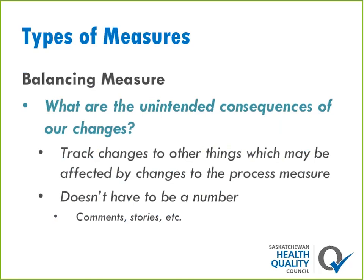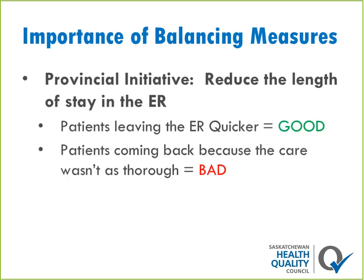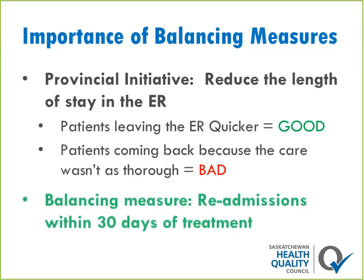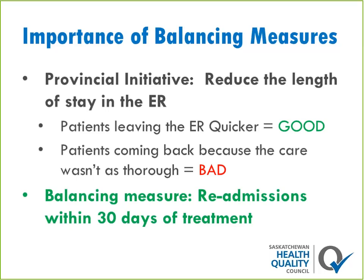The third category is the balancing measure — a really important thing to consider because these are measures that can show you if there are unintended consequences to changes you've made. Balancing measures don't have to be numerical — they can be comments or stories, anything that sheds light on other areas affected by your changes. For example, there's a provincial initiative reducing length of stay in emergency departments. If the outcome measure shows reduced time in ED, that's good. However, if patients are coming back because they received less thorough care, that's the opposite of the goal — which is why we have a balancing measure of readmissions within 30 days of treatment.